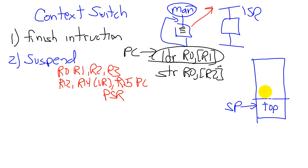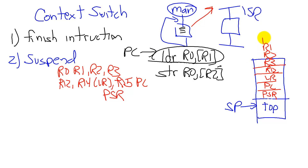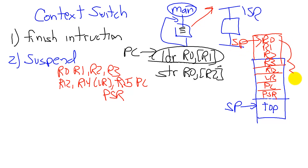The order it does it is: the program status word is here, then program counter, link register, R12, R3, R2, R1, R0 — such that the new stack pointer is pointing way up here and eight registers have been pushed on the stack.